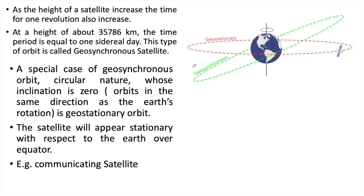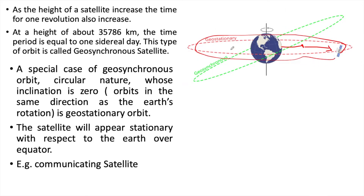Now let us talk about the types of satellites we are going to discuss. As the height of the satellite increases, the time for one revolution also increases. So when we launch a satellite at a certain height, the greater the height, the more time it takes to complete one revolution. At a height of 35,786 km from the ground, the time period is equal to one sidereal day — that is very important.